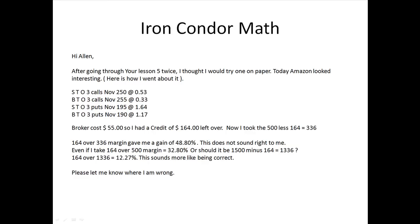On the screen here is the actual email I received. The person has set up an Amazon iron condor: selling three November 250 calls at 53 cents, buying three November 255 calls at 33 cents, selling three November 195 puts at 164 cents, and buying three November 190 puts at 117 cents. The condor appears to be set up correctly, though it is more skewed to the put side, likely because the puts carry more value.